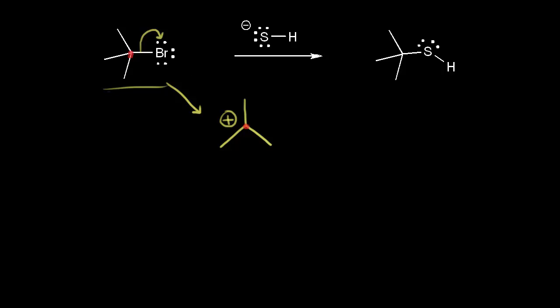The carbon in red went from being sp3 hybridized in our alkyl halide to being sp2 hybridized in our carbocation, which means the geometry directly around that carbon is planar. We also have our bromine — it now has four lone pairs of electrons around it, giving it a negative one formal charge. That's the bromide ion.